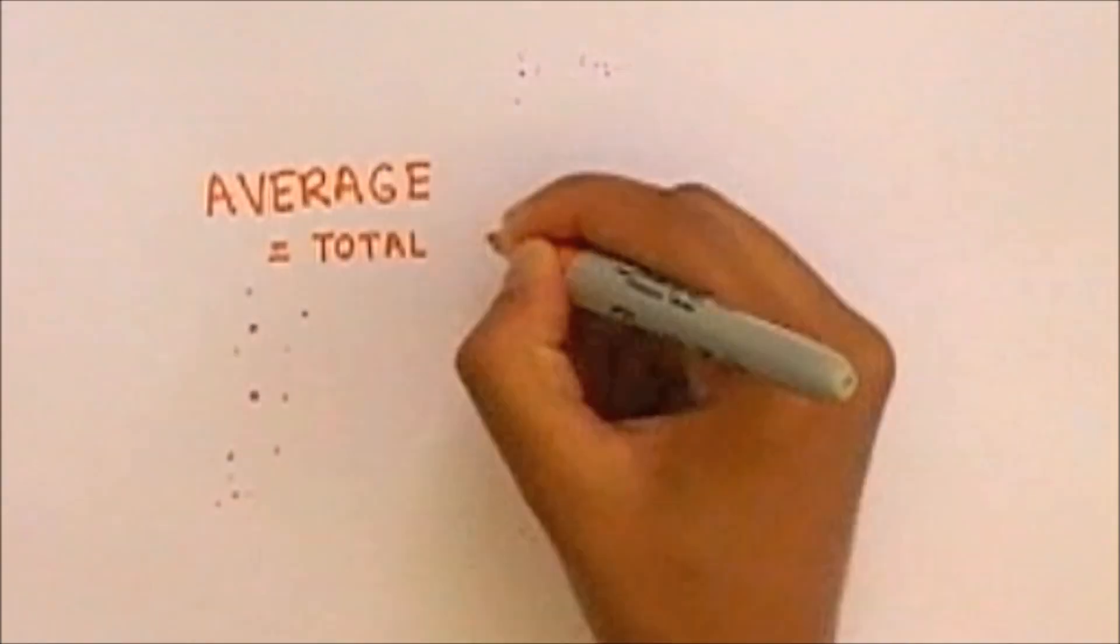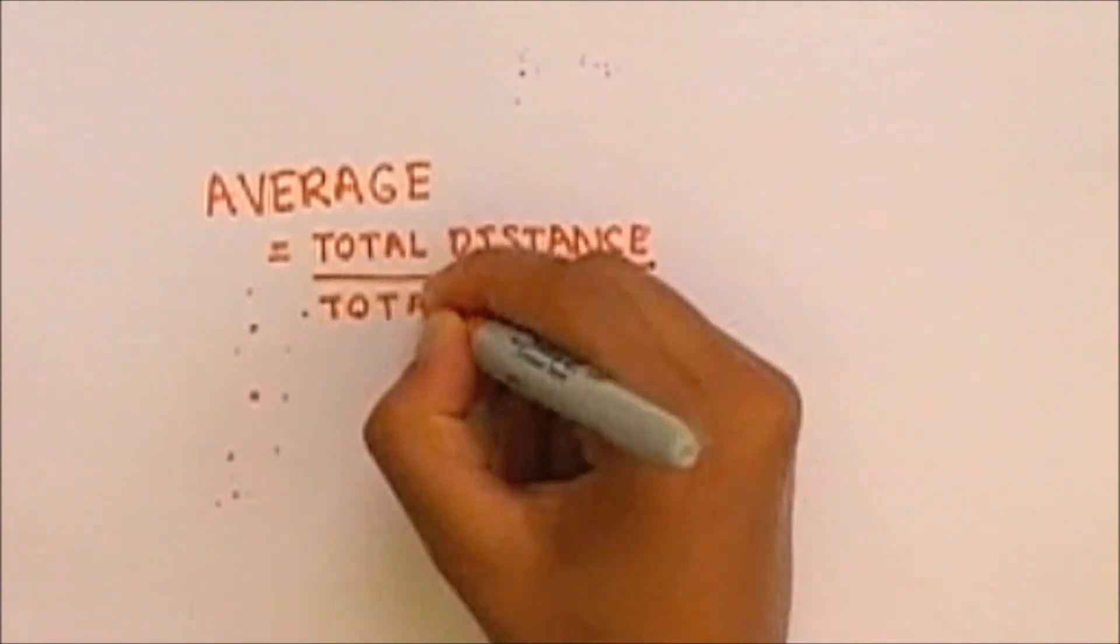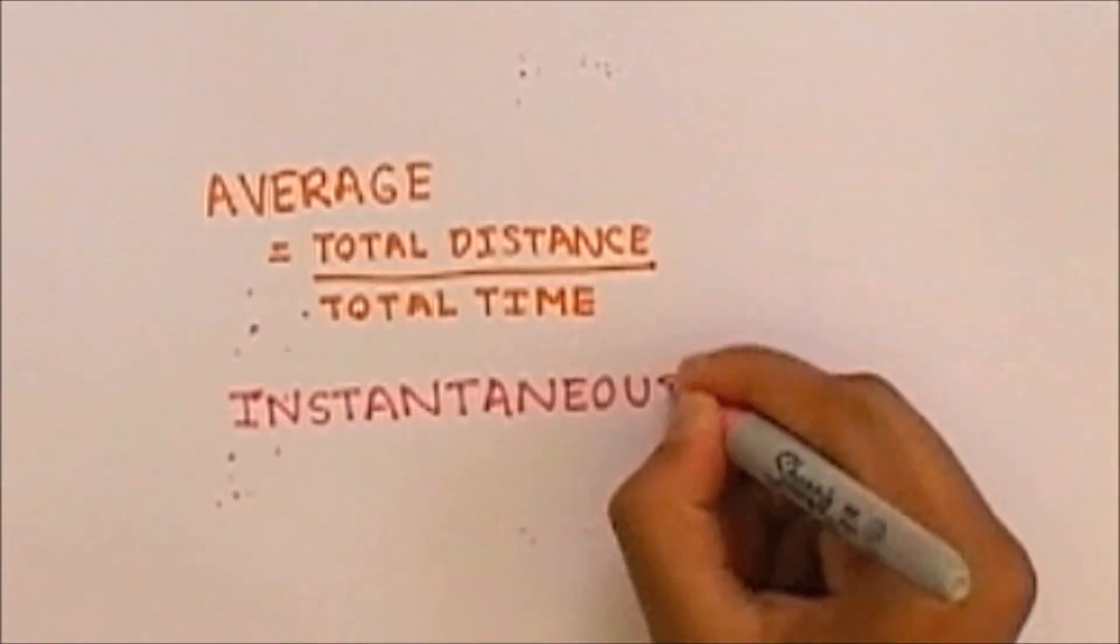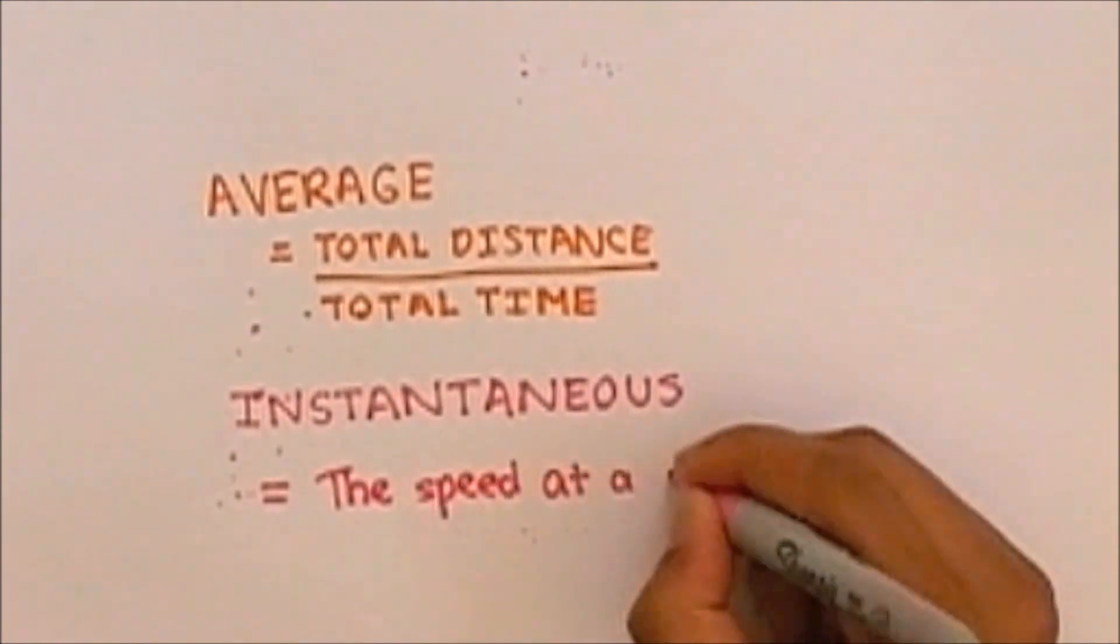The average speed of a journey is the total distance divided by the total time taken to cover that distance, whereas instantaneous speed is the speed at a certain point within the journey.